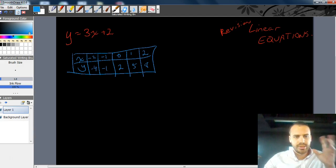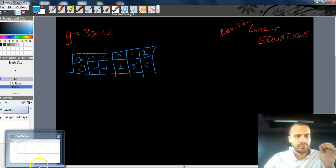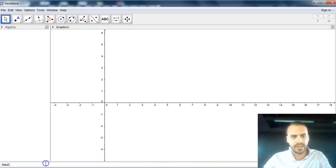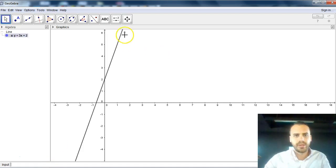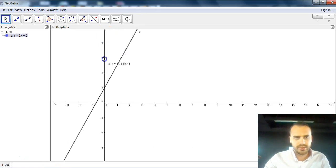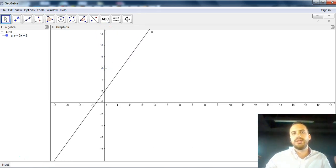Now, the third way that it can be expressed is as a graph on a Cartesian plane, something like this. So there's our three different ways of expressing a linear equation.